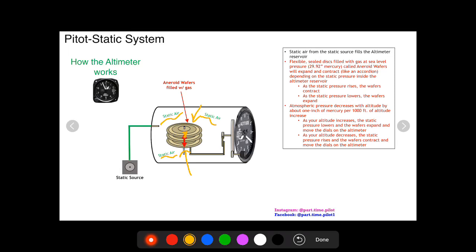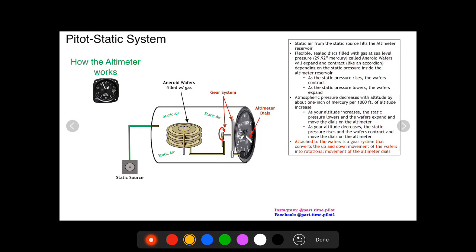Okay, so how does this make the dials on the face of the altimeter spin? Well, the expansion and contraction of this wafer is connected to a gear system which spins the altimeter dials. Simple as that.